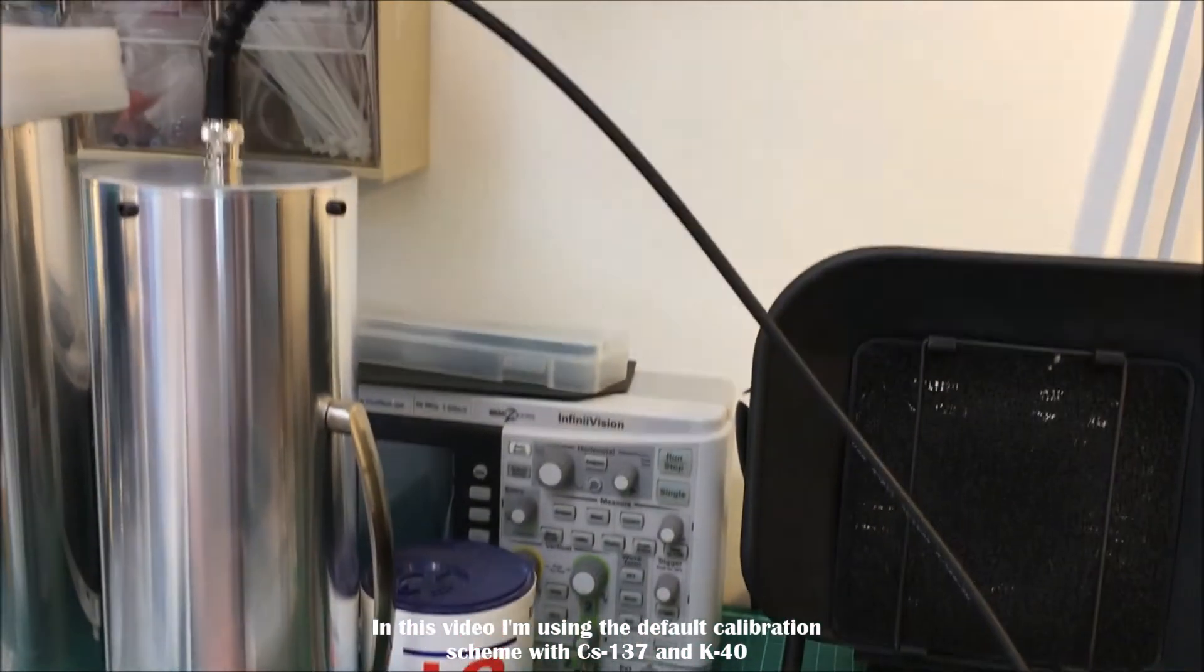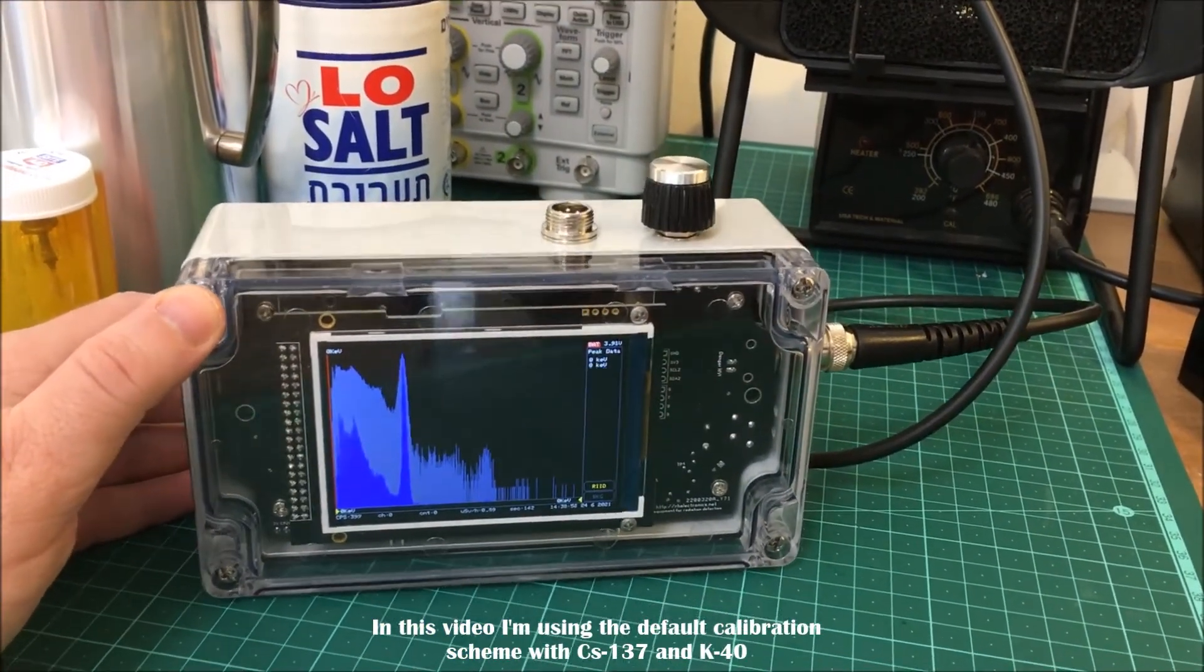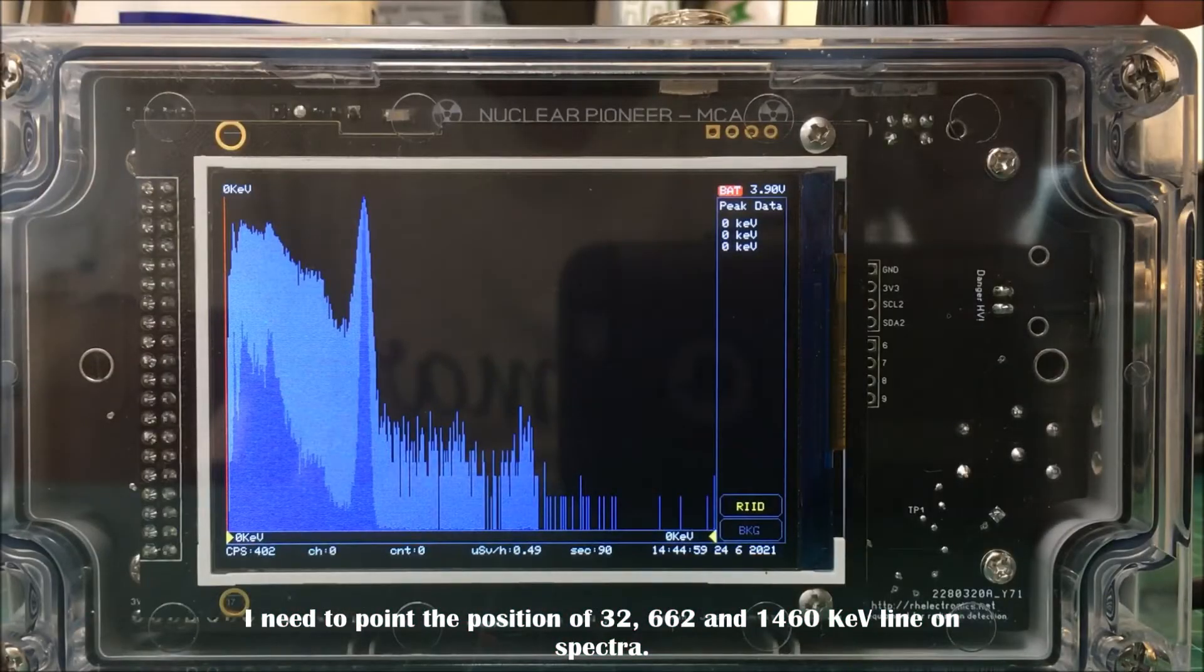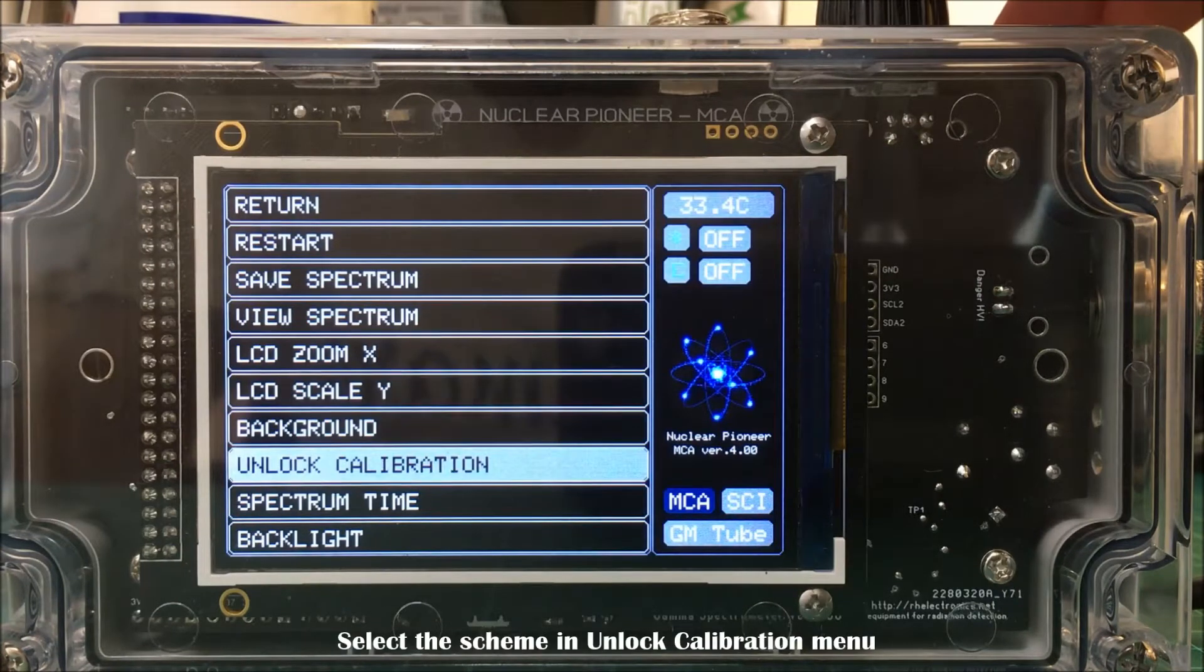In this video I'm using the default calibration scheme with cesium-137 and potassium-40. I need to point to the position of the 32, 662, and 1460 keV lines on the spectra.